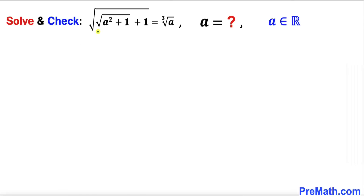In this video we are going to solve this given nested radical equation: the square root of the square root of a squared plus one, plus one, equals the cube root of a. We will also check for any extraneous solutions. Keep in mind that a represents real numbers.